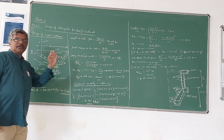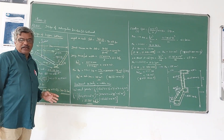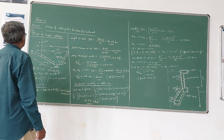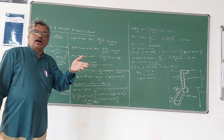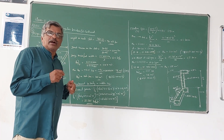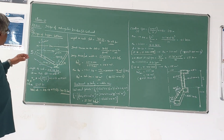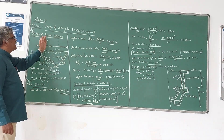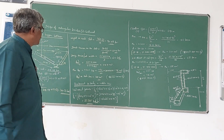Let us continue with the design of the rectangle bunker that I have covered in the previous video. In the previous video I explained how to design the dimensions of the rectangle bunker and how to design the vertical wall. Now in this slide, as a continuation of that video, we will see how we can design the upper bottom.